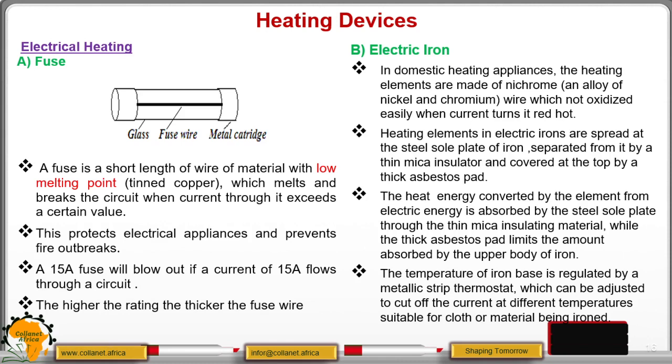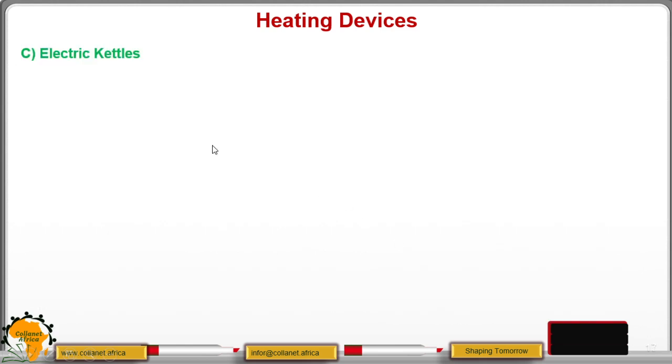Or if you have a lower temperature, or if you want a lower temperature, you can again turn. You can be able to adjust and cut off the current at different temperatures. Suitable for the clothes or the material that you are ironing.